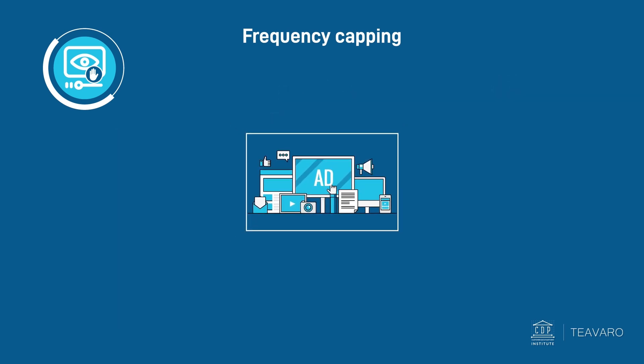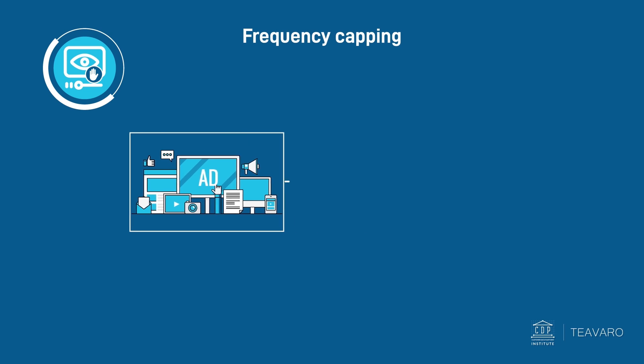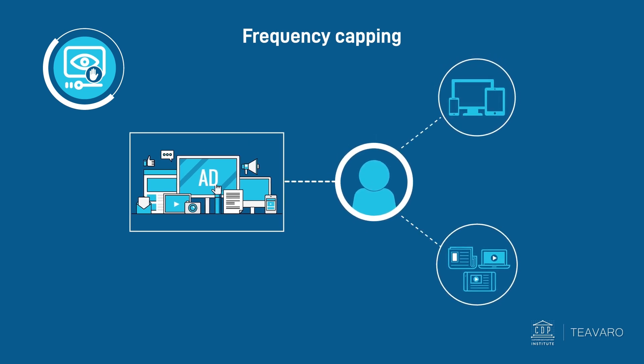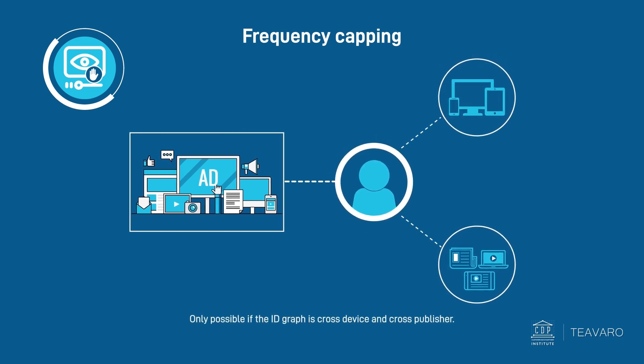Technically, the challenge is to determine whether an advertisement was served to the same person across devices and publishers. This is only possible if the ID graph is cross-device and cross-publisher.